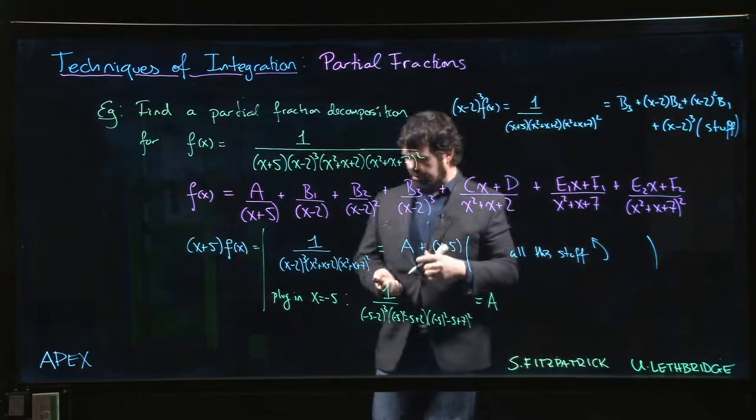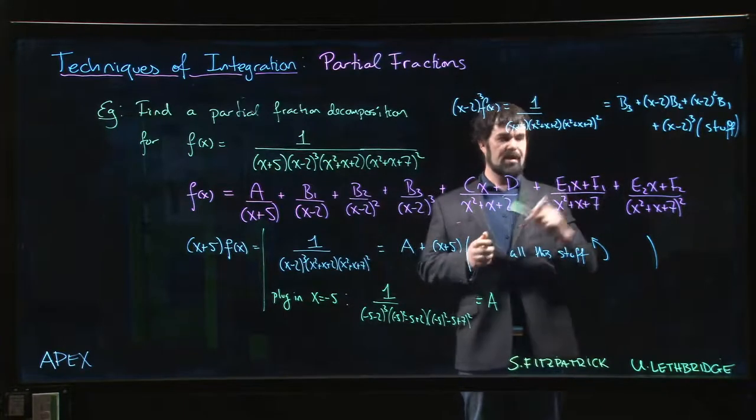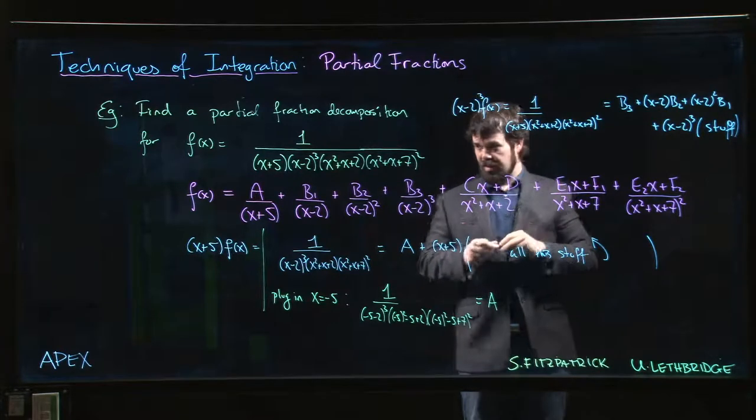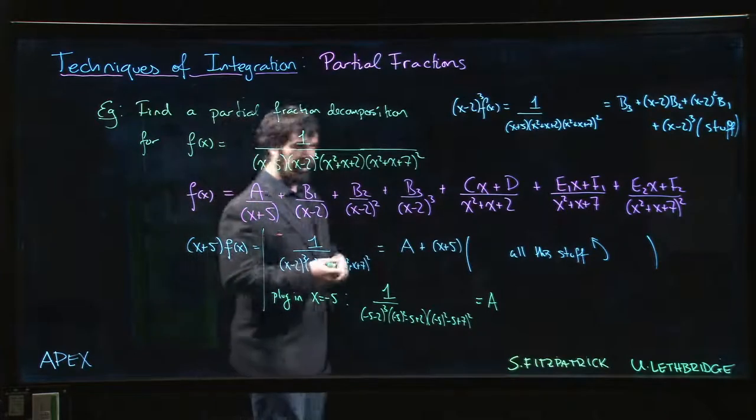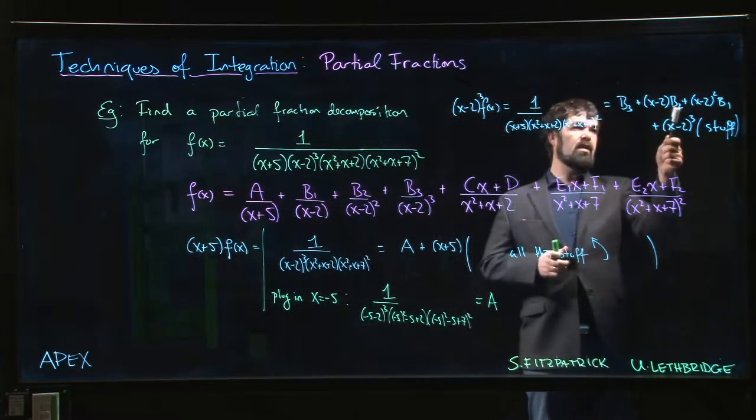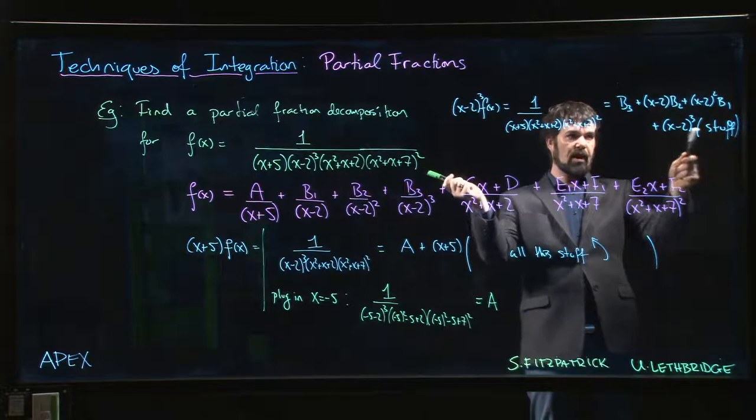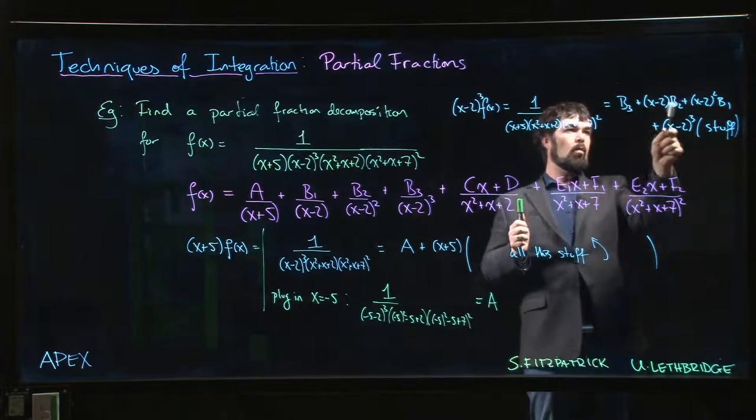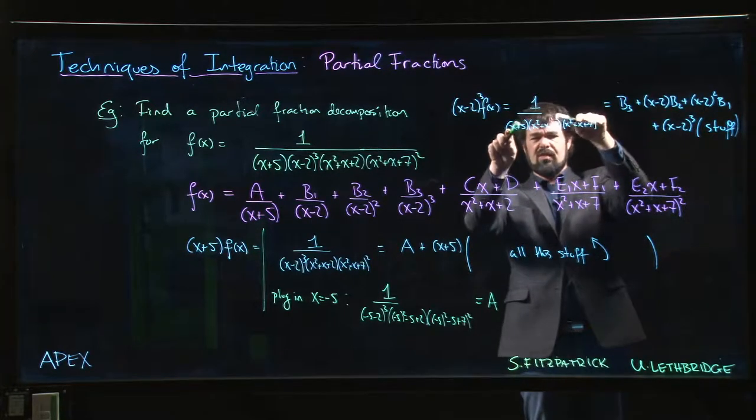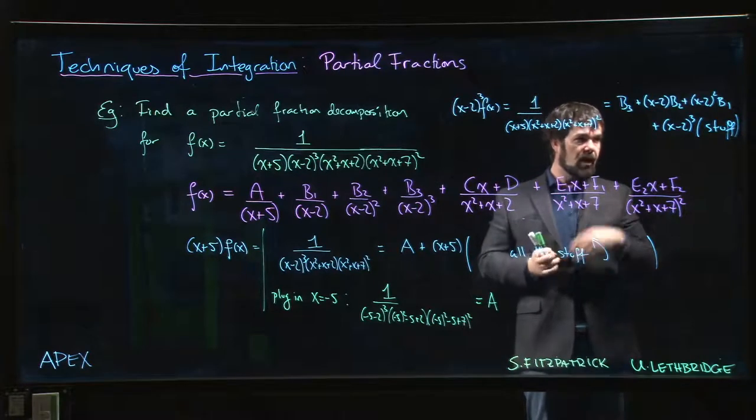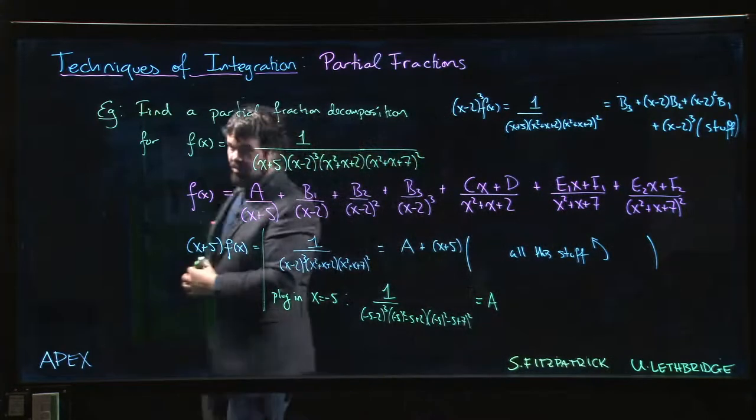What about if you want B2? Well, one of the things you can do—and for the level that we're working at, this is maybe not the best approach—but there is a systematic way to deal with these things. If you wanted to calculate B2 given this identity here, what you can do is take the derivative of both sides. Then B3 goes away, this just becomes one times B2, that still has an x minus 2 in it, that still has an x minus 2 in it. You do the derivative over here, which is going to be a bit of a pain but you can do it, and then again you plug in x equals 2.